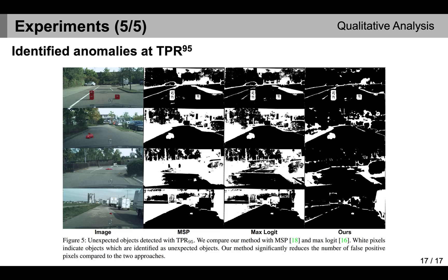This slide visualizes the identified anomalies with the threshold of the true positive rate at 95%. The white pixels indicate anomalous objects. We can see that MSP and max logit have a non-trivial amount of false positives — those which are in-distribution pixels but colored white. However, our method decreases the false positive pixels significantly. In summary, such extensive quantitative and qualitative evaluations demonstrate the effectiveness of our method.